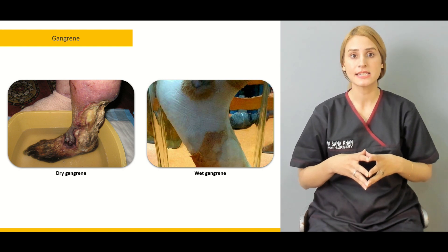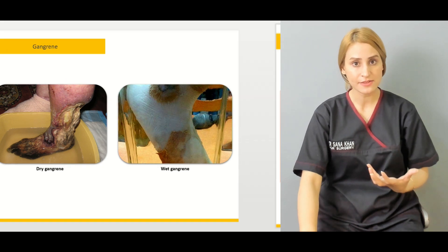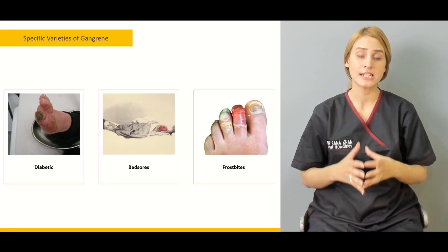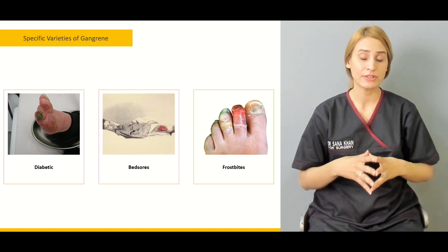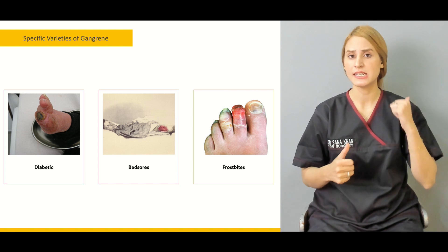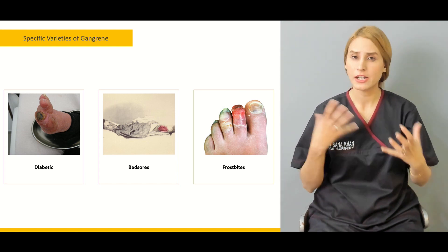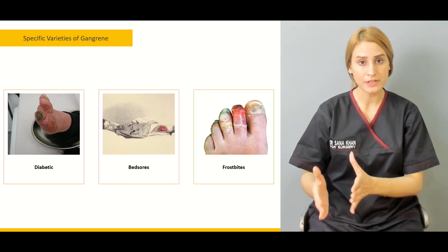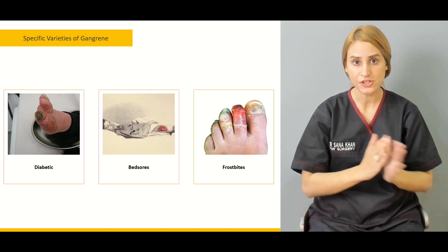We'll be talking about special varieties of gangrene, like diabetic foot, and the factors responsible for the development of gangrene in patients with diabetes mellitus — including the effect of high sugar levels on the nerves, on blood supply, and on immunosuppression.